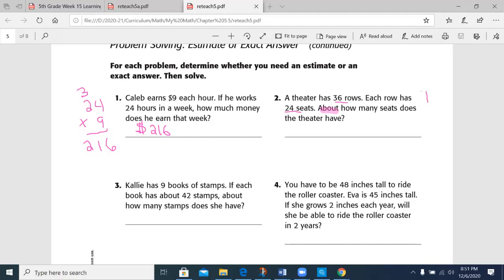So 36, I'm going to go ahead and make a 40 by rounding to the nearest 10. 24, rounding to the nearest 10, which is a 20.